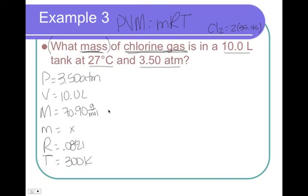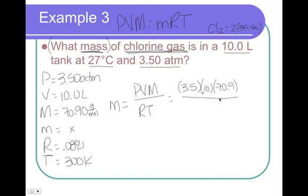So rearrange this to solve for little m. And that's going to be PV times big M over RT. Plug in your numbers: 3.5, 10, 70.9, divided by 0.0821 and 300. You work all that out, three sig figs, so that's 101. The units on mass are grams.